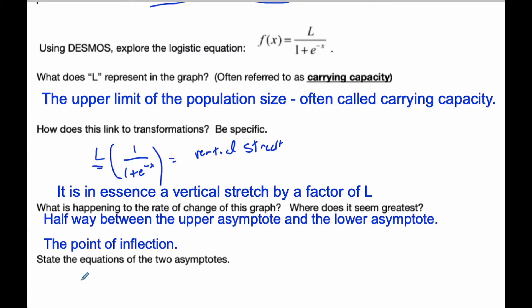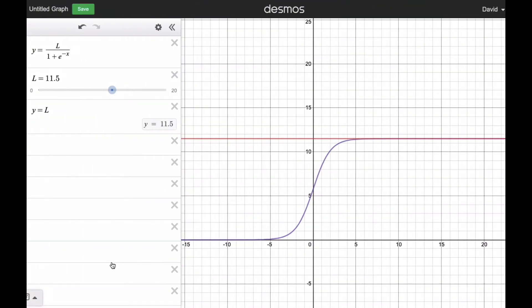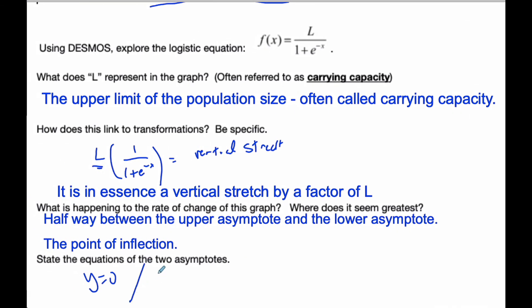And finally, the asymptotes. The first one is y is equal to zero. This is the lower asymptote down here, y equals zero. And the upper asymptote is y is equal to L.